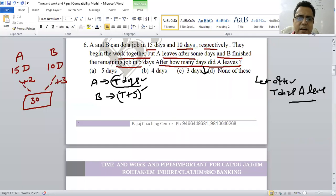A has worked T days in the format. If A has worked T days, then A has worked 2T. Now B's work, tell us how much is it? 3 units. And B has worked T plus 5. How much is the total work? 30.